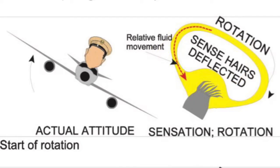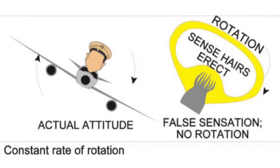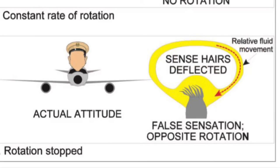When the aircraft starts a steady turn, the liquid in the canal starts to move, tending to move the sensory hair cells. After 10 to 15 seconds in the turn, the liquid stops moving, causing the hair cells to return to an upright position, falsely indicating that the aircraft is flying straight and level. When the aircraft wings are brought back to level, the liquid keeps moving, causing the sensory hair cells to move again. This leads to a sensation of turning in the opposite direction, and the pilot will tend to bank the aircraft away from straight and level.